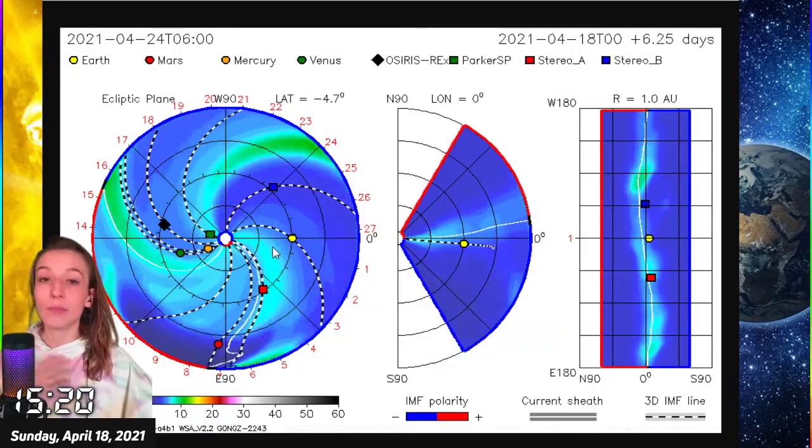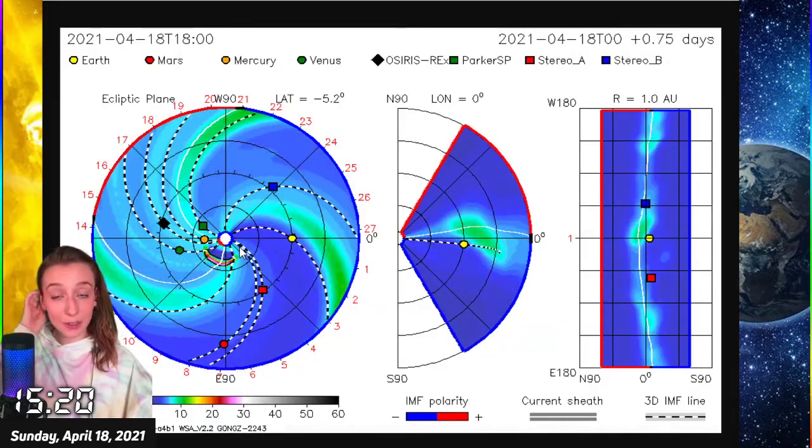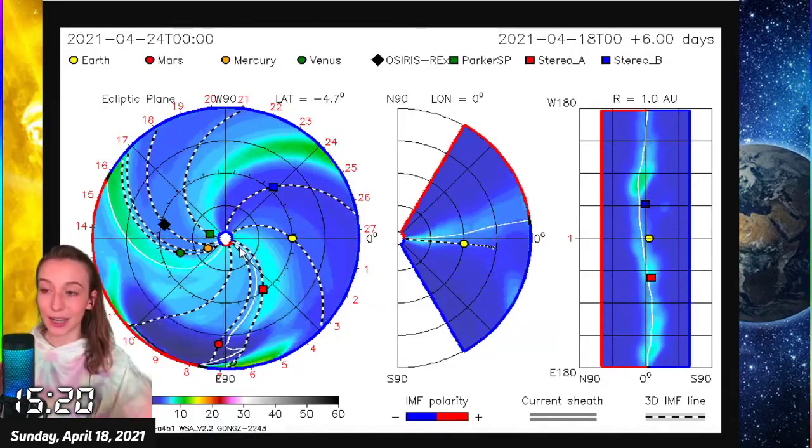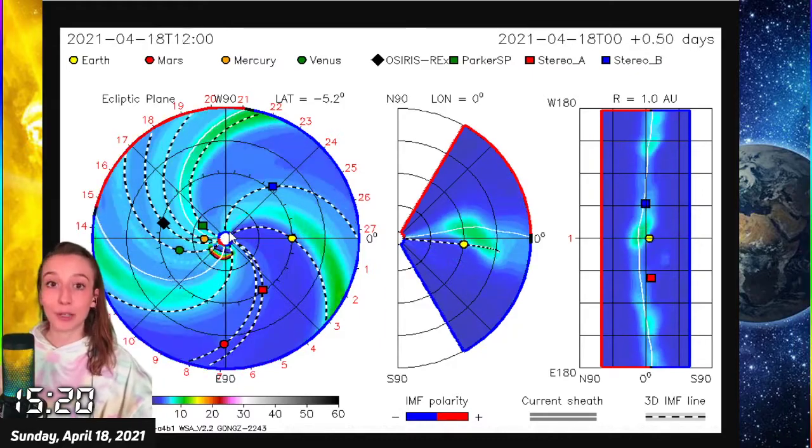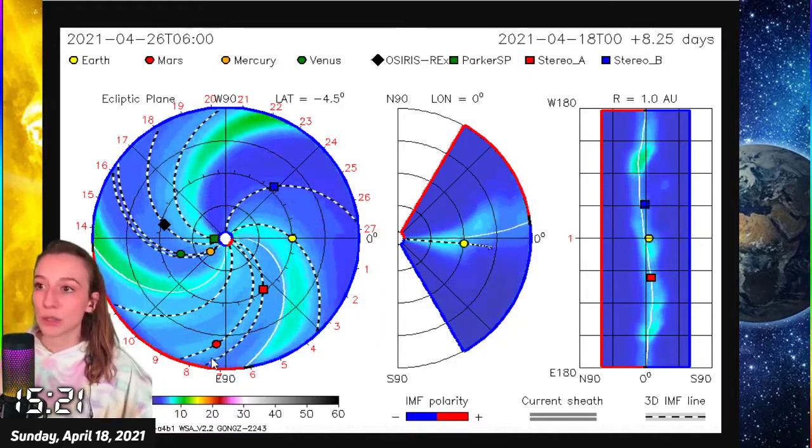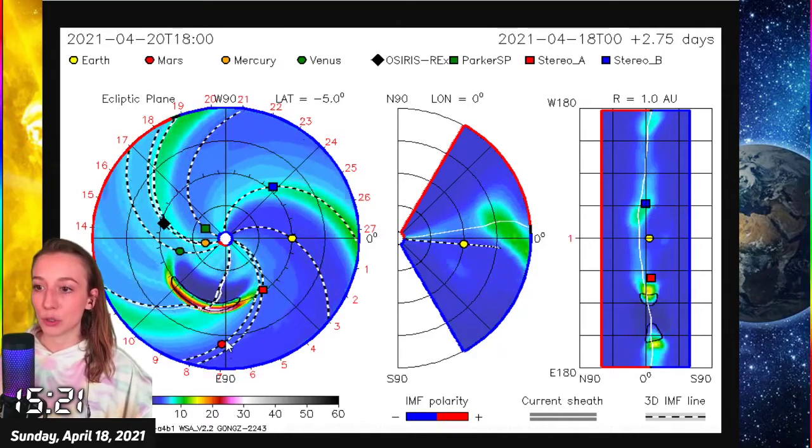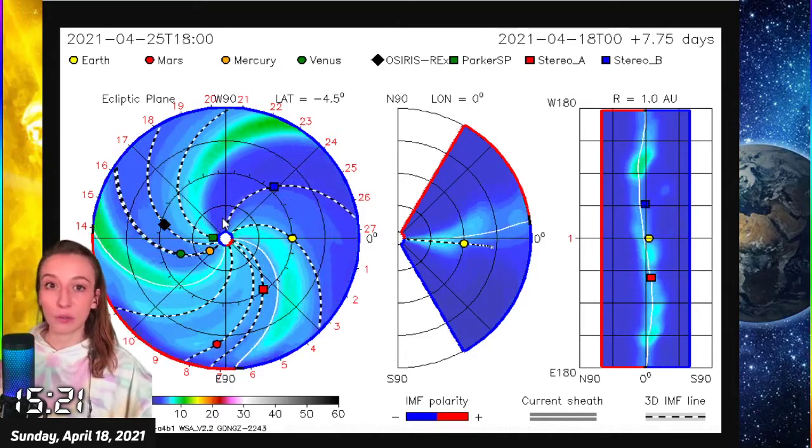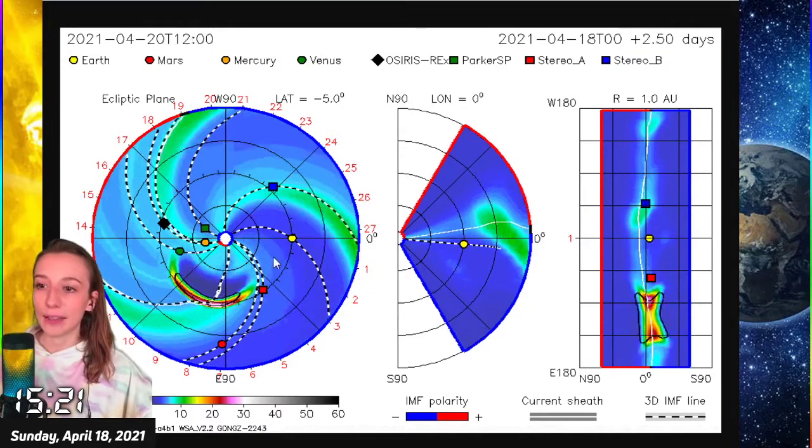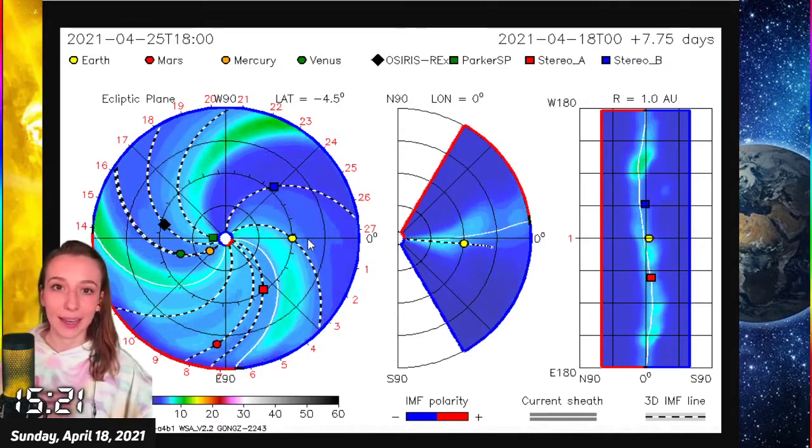It shot in the direction of Mars actually, which is super interesting to me. So those of you paying attention, that particular wave, that really fast intense one we just saw, is going right towards Mars and should be landing there around the 24th, 23rd or 24th energetically, and we're going to get the backlash of that around the 22nd or 23rd too.